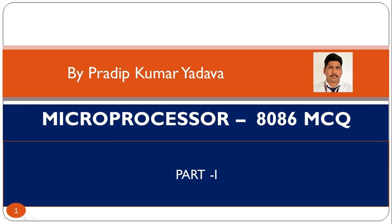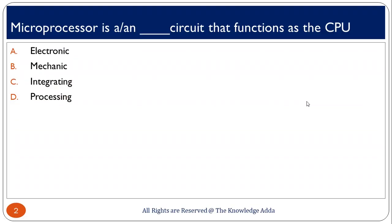Hello friends, in this video I will discuss some multiple choice questions based on the 8086 microprocessor, and this is part 1 of that series. The first question is: what is a microprocessor? A microprocessor is basically an electronic circuit that functions as the CPU, so the correct option is A.